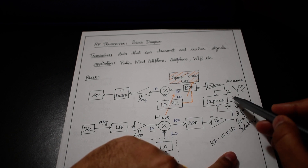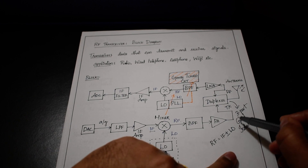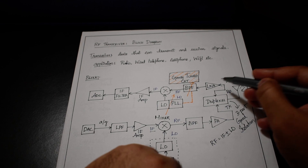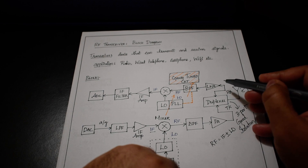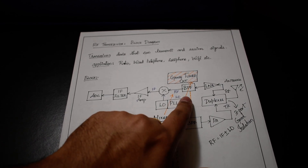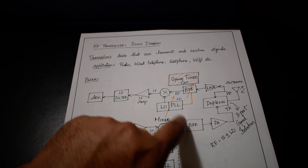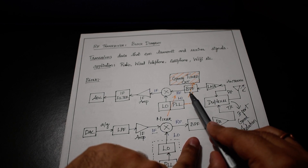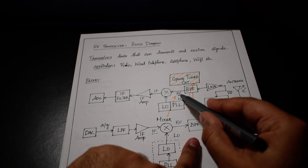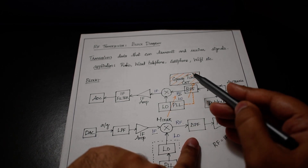Once we throw the switch to RX, the antenna gets connected to the receiver. The signal received will be a weak signal, so it must be boosted using an LNA — a low noise amplifier. After boosting the signal, we pass it through a bandpass filter. This bandpass filter is important in the receiver architecture; we will discuss the gang tuned circuit in a moment. After the signal is band-limited, we get the desired RF signal, which is then combined in a mixer with the LO generated from the PLL.